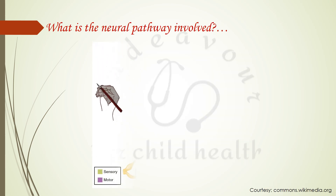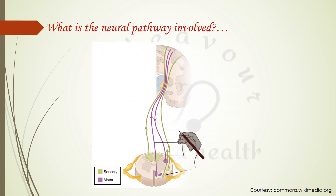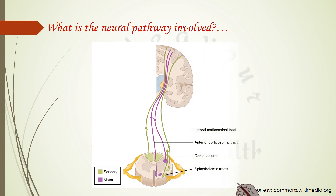To revise, the corticospinal tract is a descending motor tract which originates from the cerebral cortex, passes via the brainstem, reaching up to the spinal cord, from where the lower motor neuron begins in the form of peripheral nerves. These fibers maintain inhibitory control over the spread of the impulses from the dermatome which is stimulated to other levels of the spinal cord.